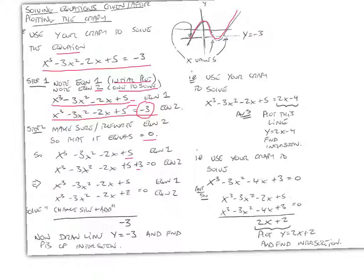That's really what we're doing here. And so we have, eventually, our first equation over our second equation, which is now equal to 0. And we change the sign and add these guys. So we would have minus x cubed, x cubed goes, plus 3x squared goes, minus 2x plus 8 goes, plus 5 minus 8 becomes minus 3. Now, we draw the line y equals minus 3, and we find the points of intersection, which is what we've done up here.